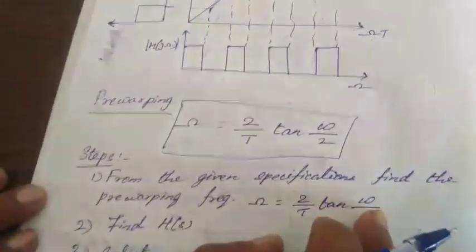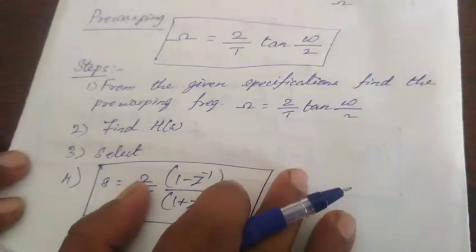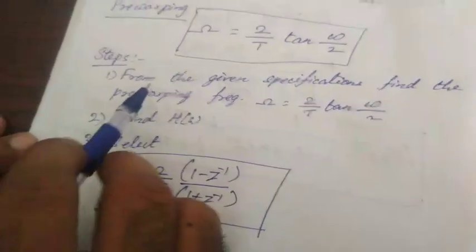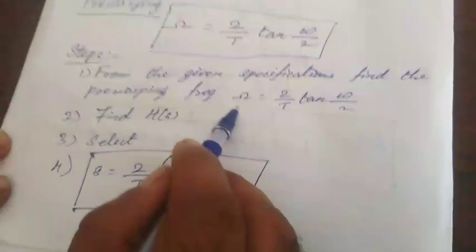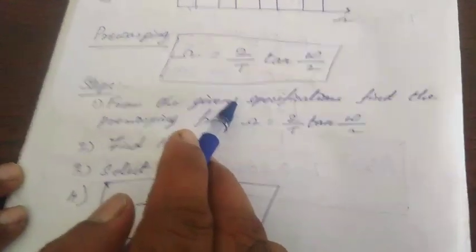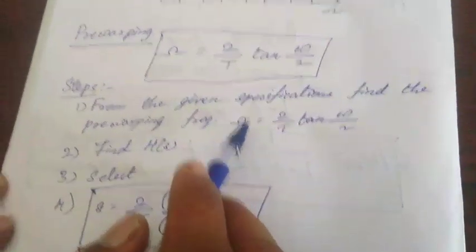Now the pre-warping is the first step of the digital filter design. The steps are called bilinear transformation. From the given specifications find the pre-warping frequency. This is the first step.